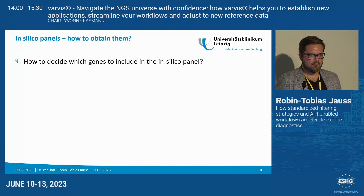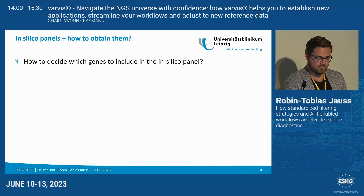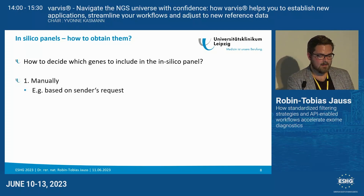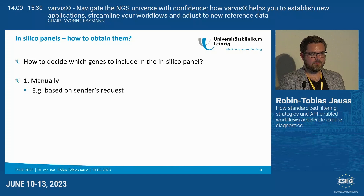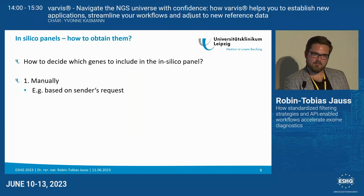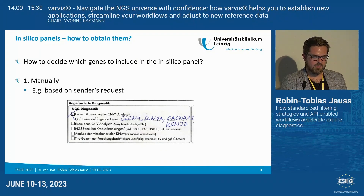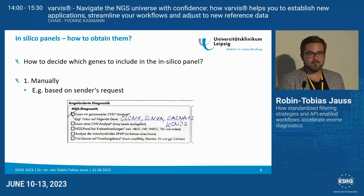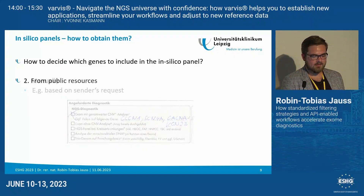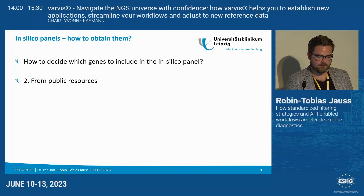The question is: how do we obtain these in silico panels in the first place? How do we decide which genes to include for our specific patient? We can do this either manually — if you are lucky, the sender writing on the lab request report is familiar with human genetics and suspects a specific disorder with specific genes in mind. But as those working in diagnostic departments may know, this is not always the case. Most of the time, the sender is not familiar with human genetics, so we need to get these in silico panels from public resources.